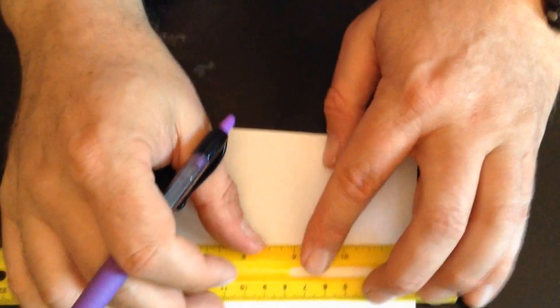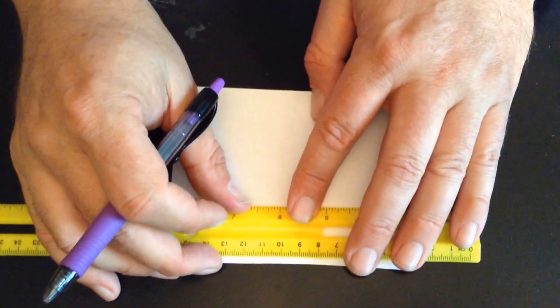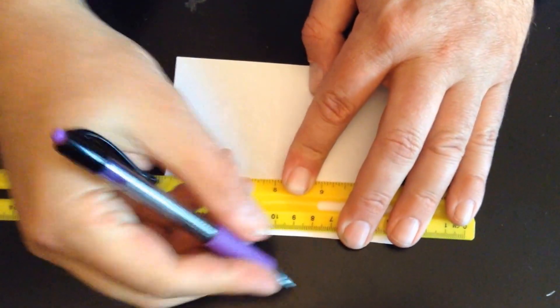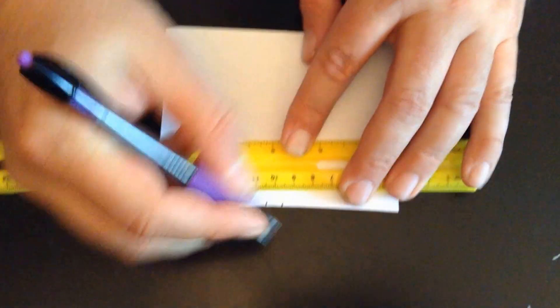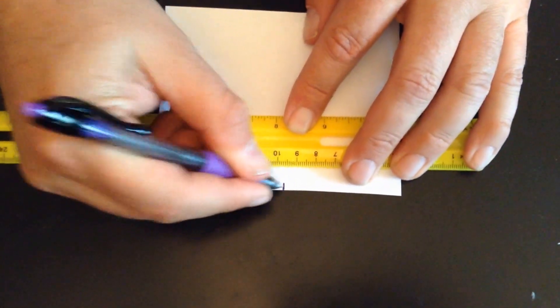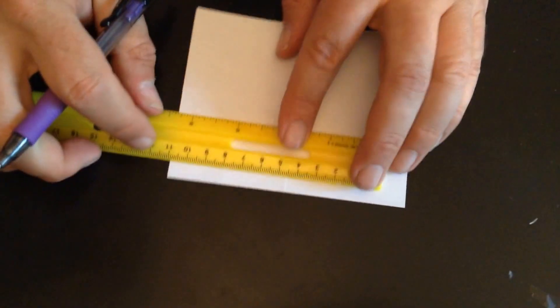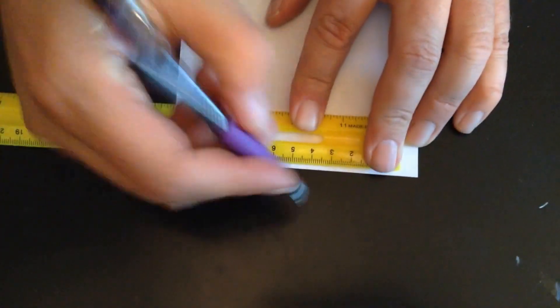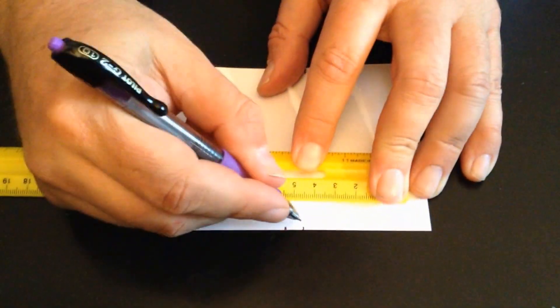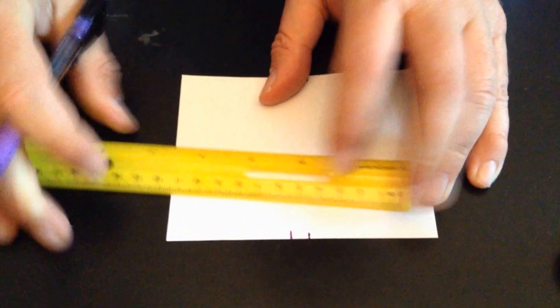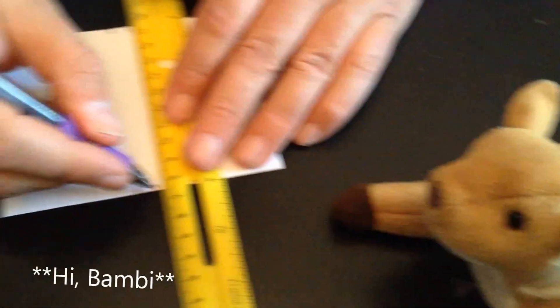Alright, now what we're going to do next is from the center crease, I am going to move left and right, and I'm going to make a dot at four millimeters. Now, I'm going to make these dots bigger than they really need to be, just so you can see them a little better. Camera, can you see that okay? Alright. So, four millimeters, four millimeters. I'm going to do that at the top and the bottom. Again, make these a little bit bigger than I need to. Now, what I'm going to do is I'm going to play connect the dots.